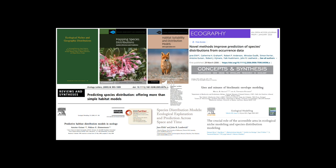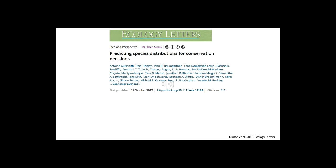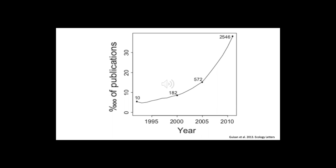These models can be closer to the actual or potential distribution depending on the portion of the realized niche that is captured, whether model overfitting is minimized, and whether proximal or distal predictors are used. As discussed in this influential paper in Ecology Letters from 2013, species distribution models are increasingly proposed to support conservation decision-making, in part because many decisions about conservation actions are becoming more spatially explicit.